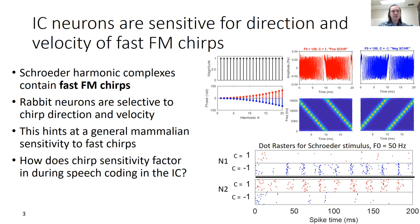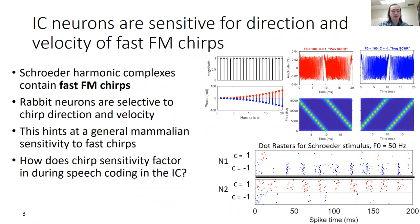Schroeder stimuli are unique harmonic complexes with flat magnitude spectra and a specific phase spectrum such that there is a linear frequency chirp that goes from the highest harmonic to the fundamental or vice versa, all contained within a pitch period. That makes these chirps much faster than slower chirps that are more commonly studied, such as formant transitions. Flipping the phase function changes the chirp direction, and changing the fundamental results in a change of chirp velocity.